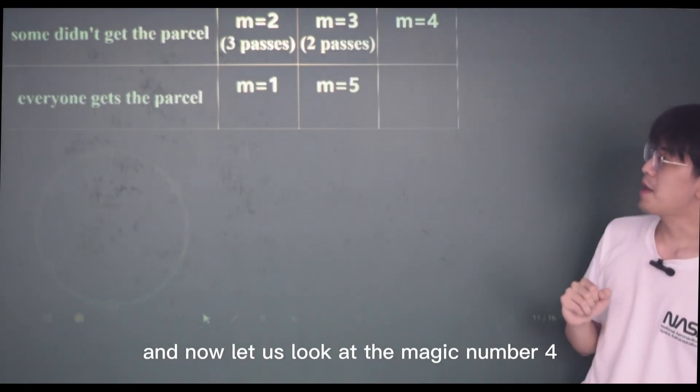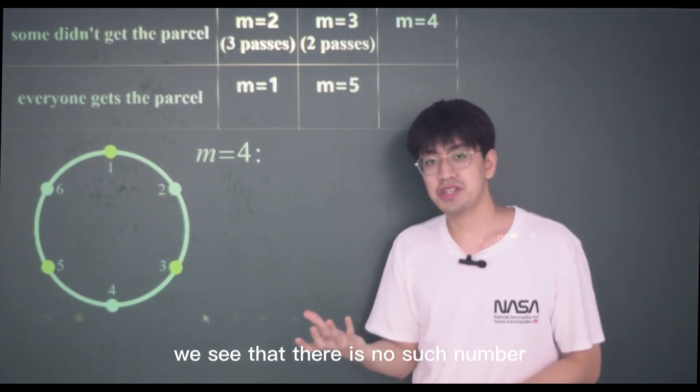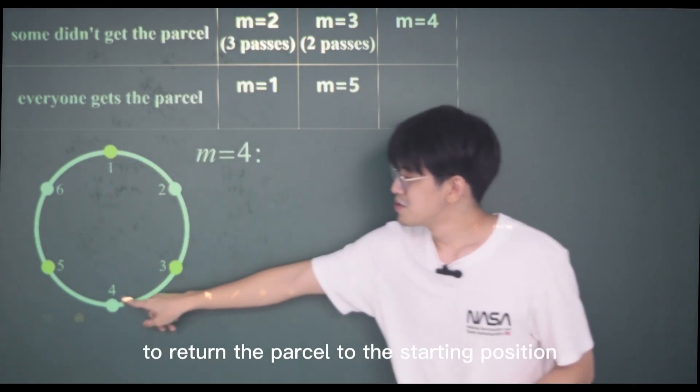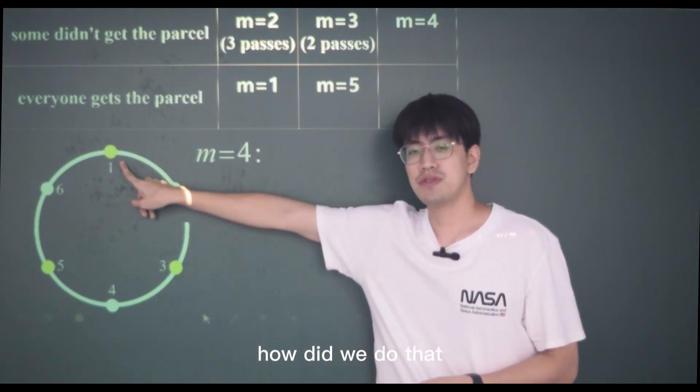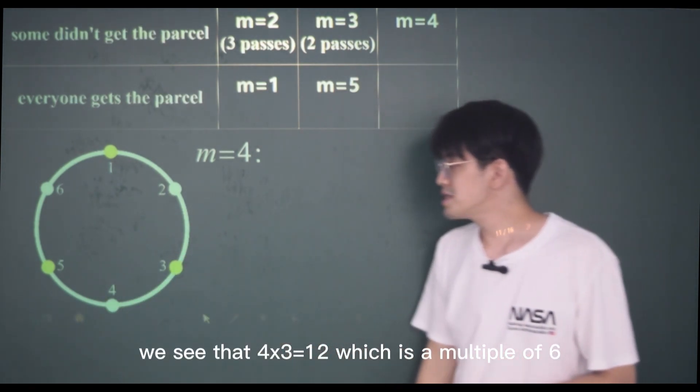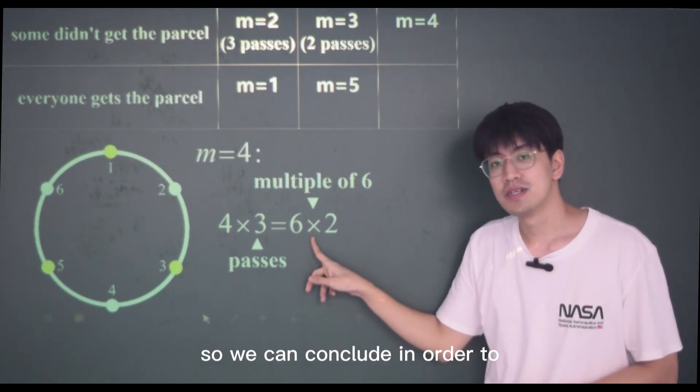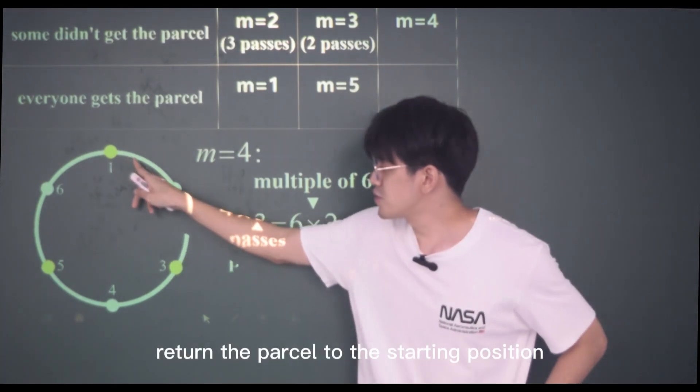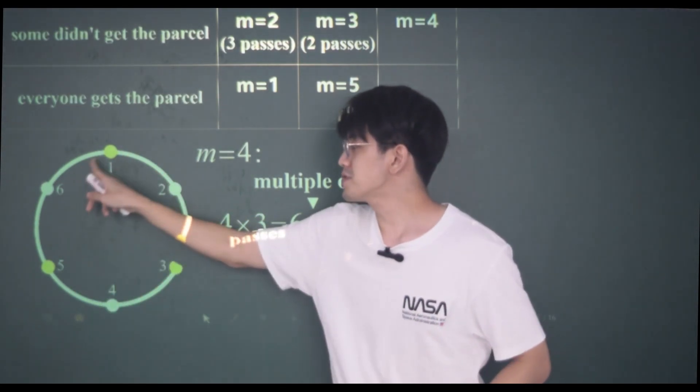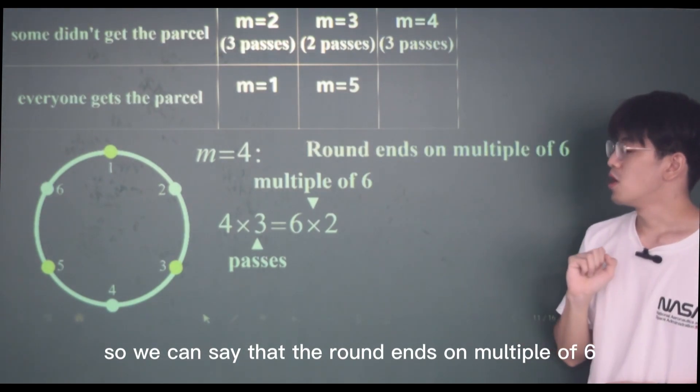Let us look at the magic number four. Something interesting is happening here. We see that there is no such number we multiply with four would give us six. However, we still manage to return the parcel to the starting position. How did we do that? You are correct, by traveling this circle twice. We see that four times three equals twelve, which is a multiple of six. So we can conclude, in order to return the parcel to the starting position, we can go through this cycle as many times as we want as long as the parcel returns to the starting position. So we can say that the round ends on multiple of six.